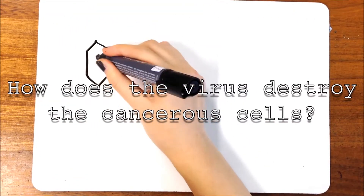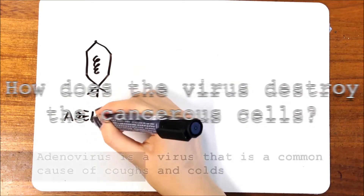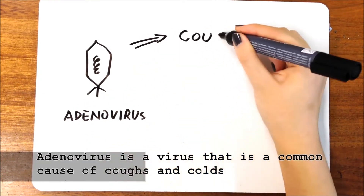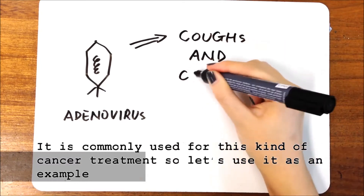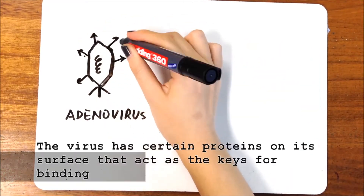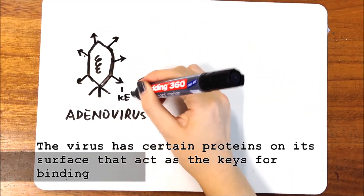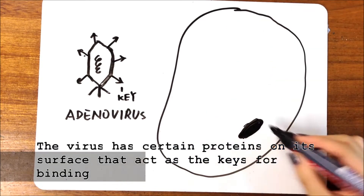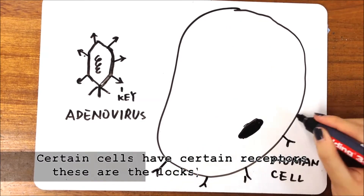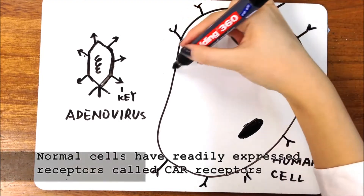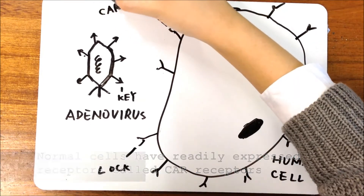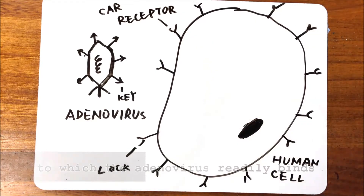So how does the virus destroy the cancerous cells? Adenovirus is a virus that is a common cause of coughs and colds, and it is commonly used for this kind of cancer treatment. The virus has certain proteins on its surface that act as the keys for binding. Certain cells have certain receptors — these are the locks. Normal cells have readily expressed receptors, called CAR receptors, to which the adenovirus readily binds.